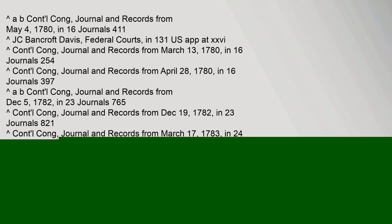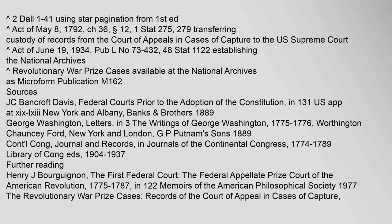Sources include 2 Dall. 1–41 using star pagination from the 1st edition; Act of May 8, 1792, ch. 36, section 12, 1 Stat. 275, 279, transferring custody of records from the Court of Appeals in Cases of Capture to the U.S. Supreme Court; and Act of June 19, 1934, Pub. L. No. 73-432, 48 Stat. 1122, establishing the National Archives. Revolutionary War Prize Cases are available at the National Archives as Microform Publication M162.